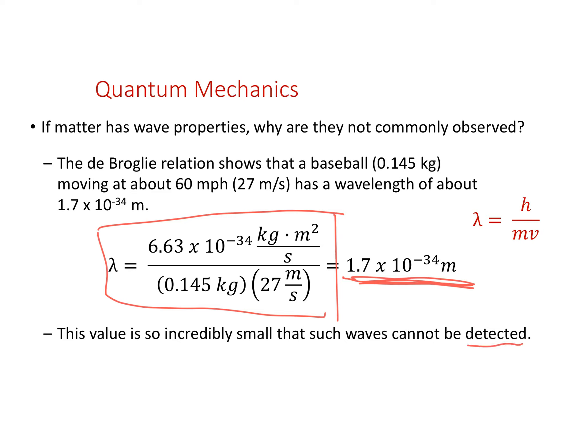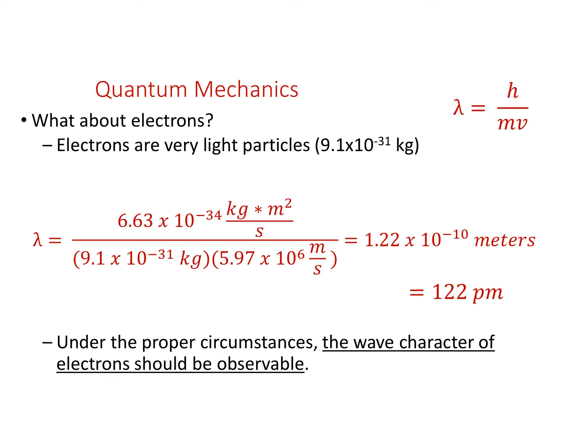That wavelength for a baseball is so small we can't detect it. Things that have mass do have a wavelength associated with them, but for objects on our scale that wavelength is incredibly small — we will never be able to detect it. However, what about something like an electron? Electrons are incredibly small — 9.1 times 10 to the minus 31 kilograms — and electrons have a wavelength on the scale of approximately 122 picometers, a scale that we can detect and work with.